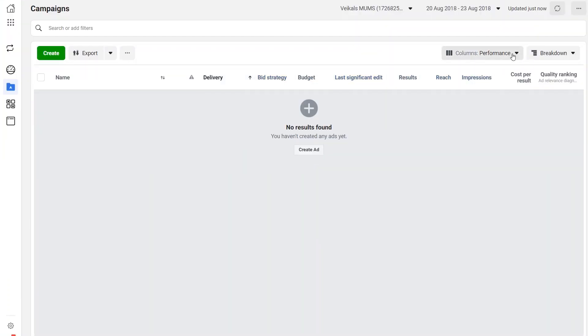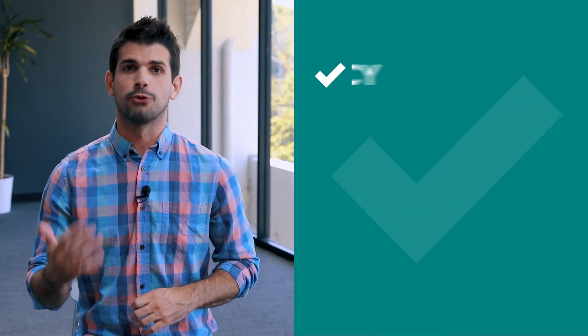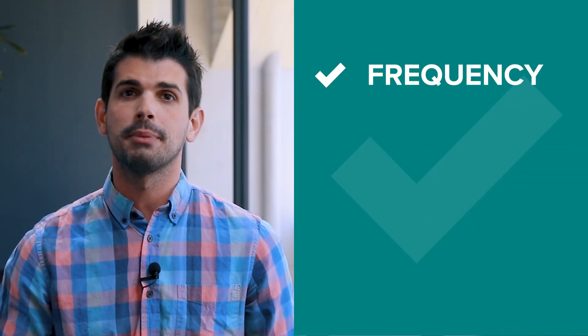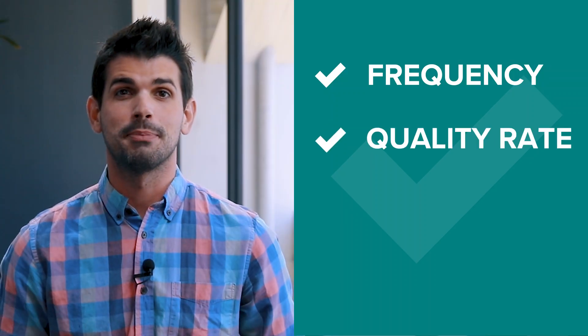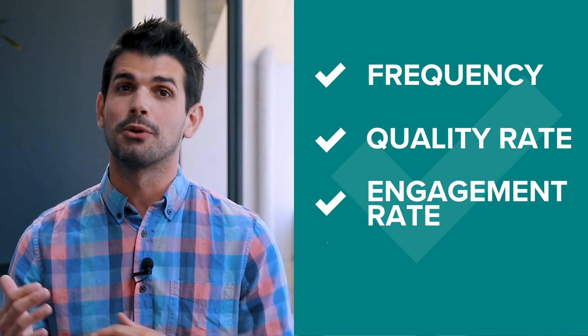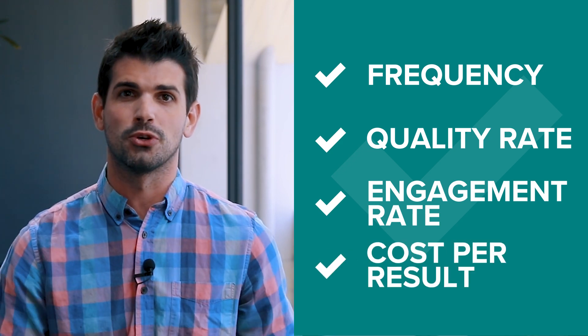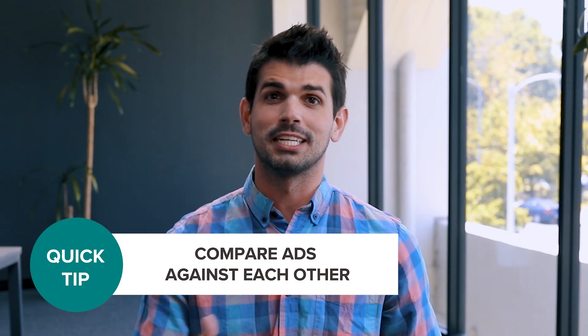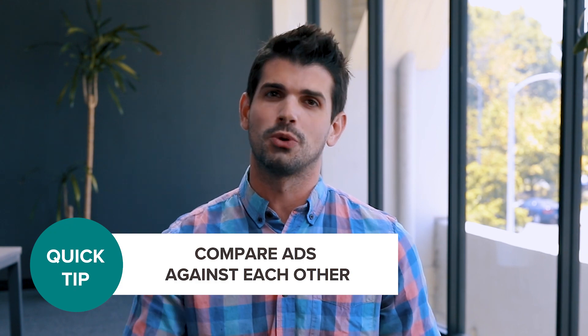You can customize your Ad Manager dashboard to show metrics useful for deciding which ads work best. Find the Customize Columns option on your dashboard. I'd recommend putting up frequency — this metric shows how many times one person has seen your ad. If this number goes higher than 3 or 4, the ad isn't reaching any new people and you should probably shut it down. Other metrics to keep an eye on are quality and engagement rate rankings, as well as cost per result. Compare these metrics across your ads to determine which ones are doing better.